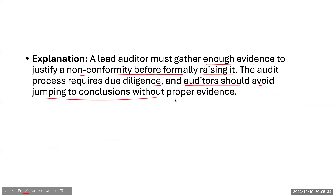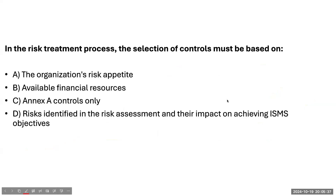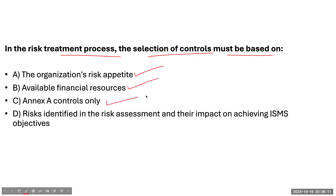The next question: in the risk treatment process, the selection of controls must be based on what? Should controls be selected based on the organization's risk appetite? Based on available financial resources? Based on Annex A controls only? Or should controls be selected as per the risks identified in the risk assessment and their impact on achieving ISMS objectives?